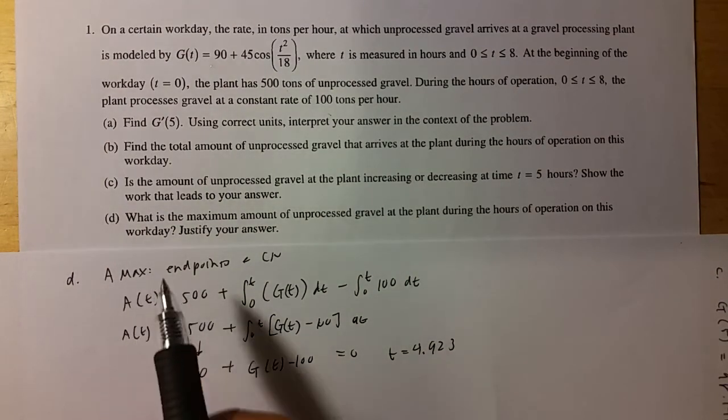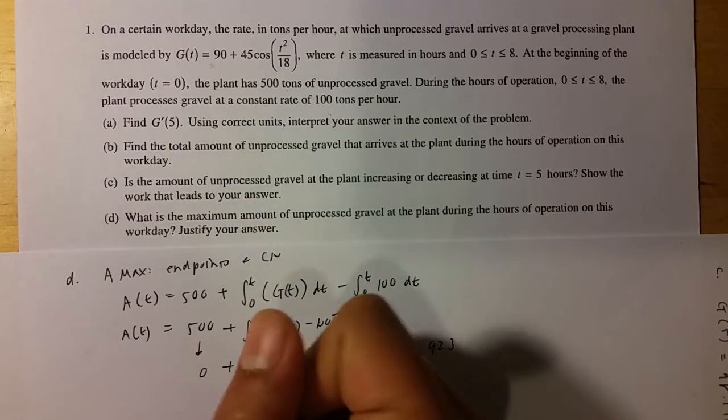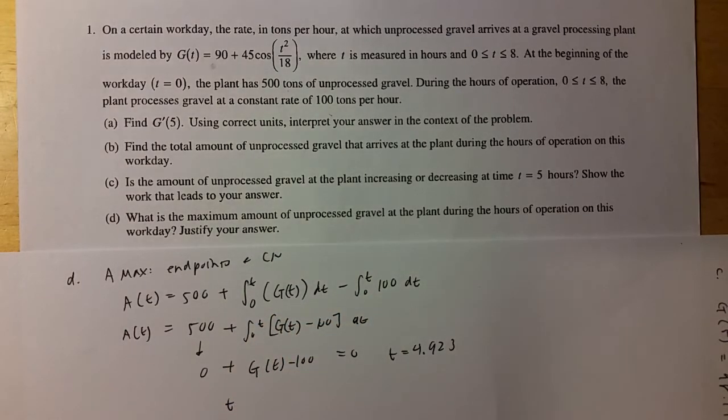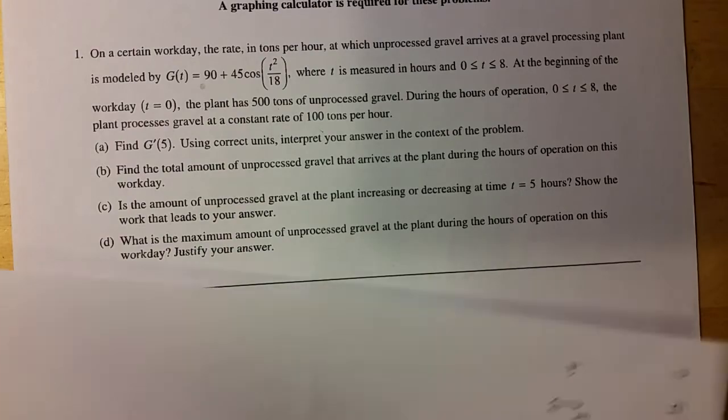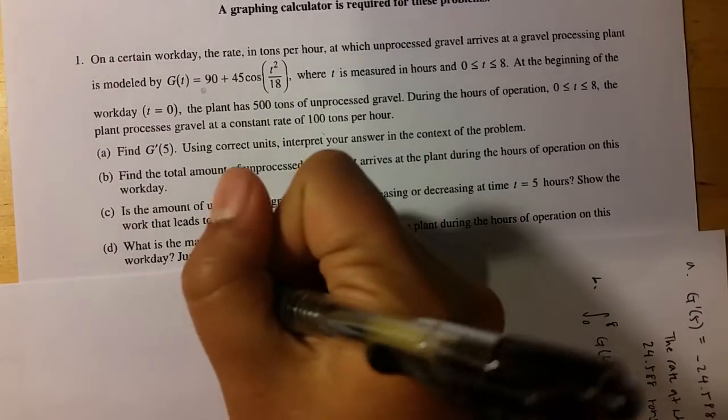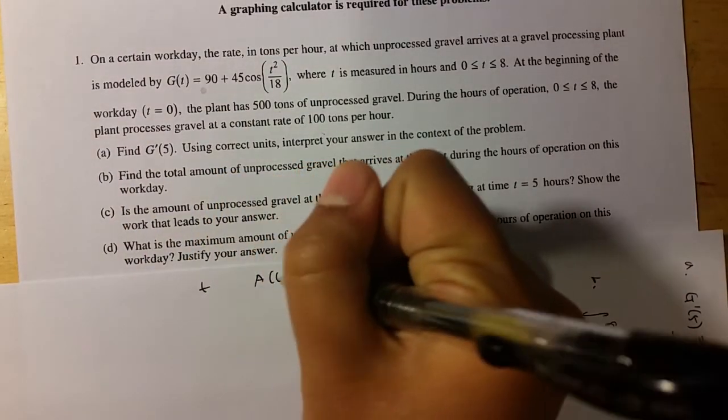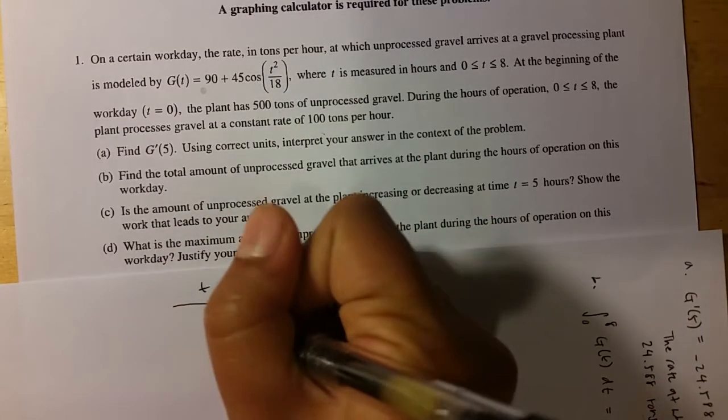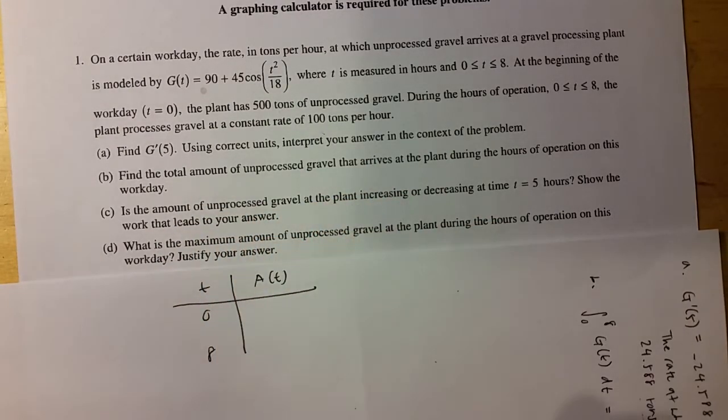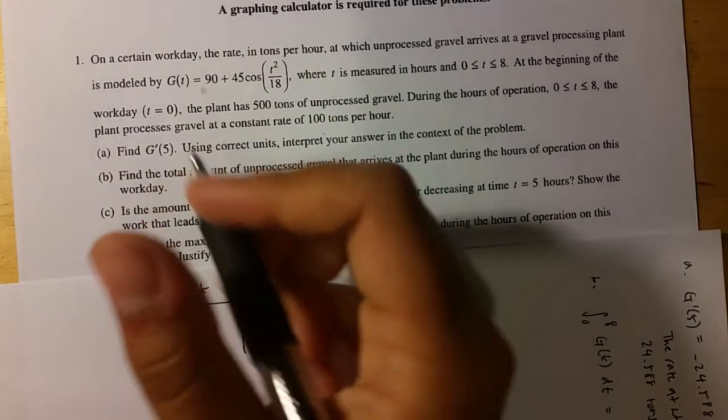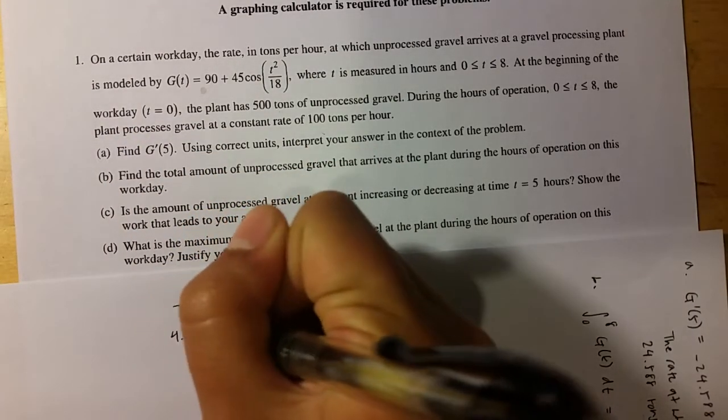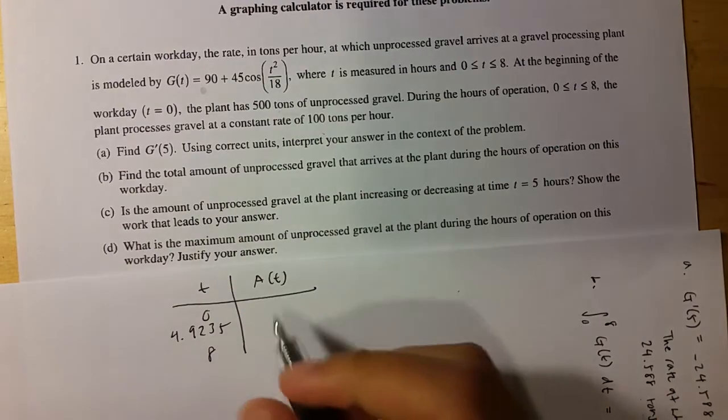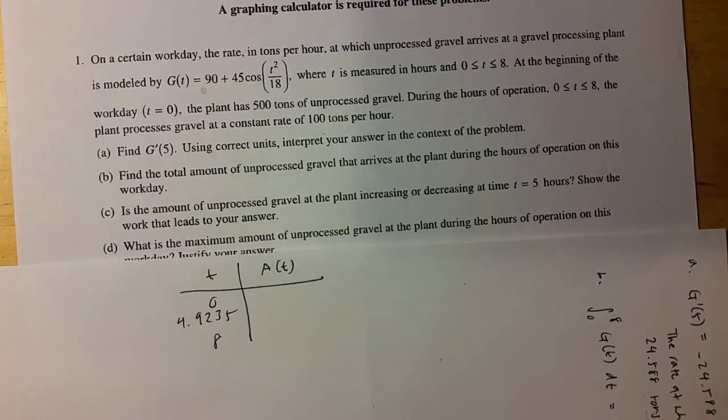But remember, for absolute maximum, we have to test critical numbers and endpoints. So let's just make a chart maybe of, let's say T and A of T. So the time and the amount of gravel at that time. So the endpoints are zero and eight, the beginning and the end of the workday. And then the critical number in between is 4.9235.